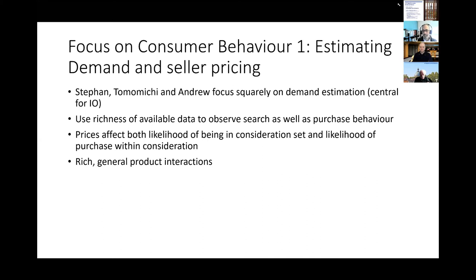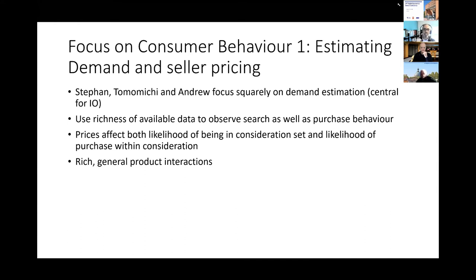Stefan and his co-authors focus very squarely on the demand estimation aspect, relying on the richness of available data. We can gain a lot of information from the search process, which we can directly observe, as well as from purchase behavior. They aggregate the search process, looking at the list of things a consumer has ever looked at rather than the sequence, saying these things tend to get looked at together - and that tells us something about substitution.